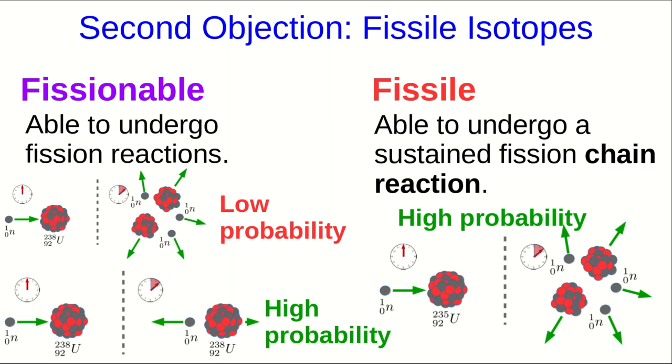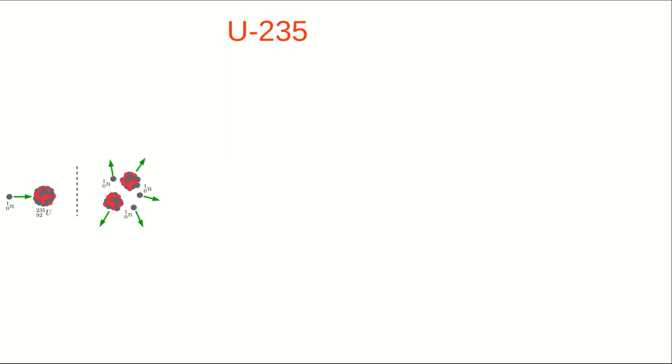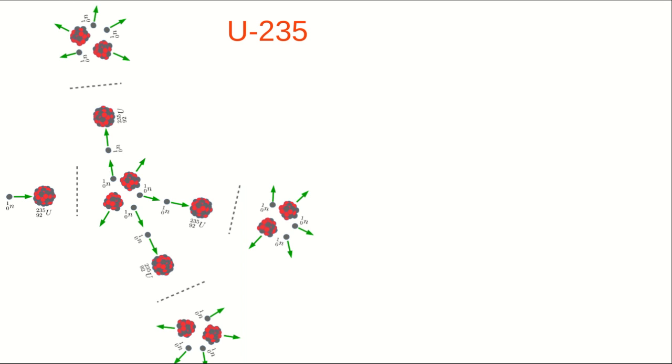Suppose we have a fission event of U235, and that produces three neutrons. Well, because it has a high probability of fission, those three neutrons are quite likely to go on to cause fission in other U235 nuclei. And so we get a chain reaction with more and more fission occurring.